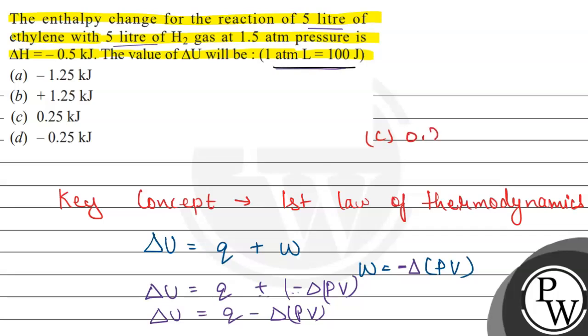The answer is minus 0.25 kJ. Let us mark option C as the final answer of this question. Options A, B, and D are incorrect. Hope you understood it well. Best of luck.